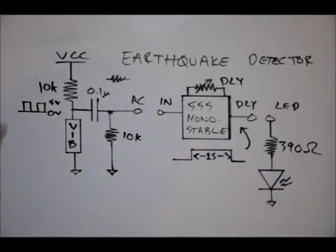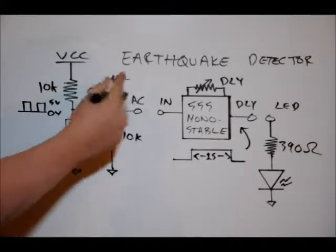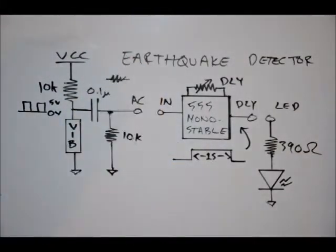And we want to get rid of that DC component, that DC variable between 0 and 5 volts. We want to turn that into a little tiny AC waveform that's just a few millivolts, positive and negative.